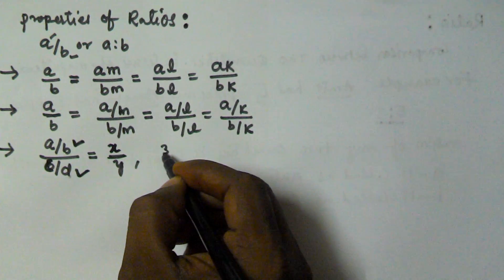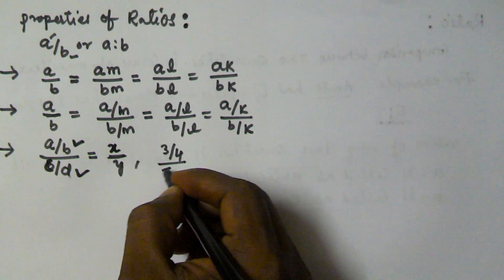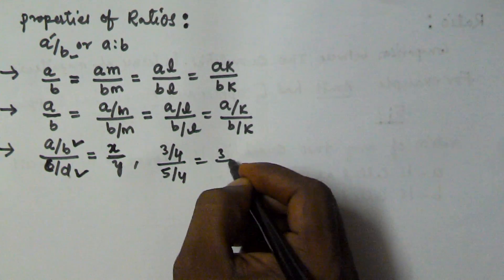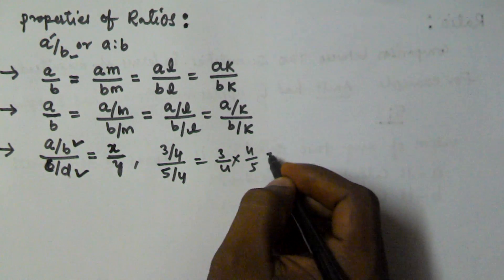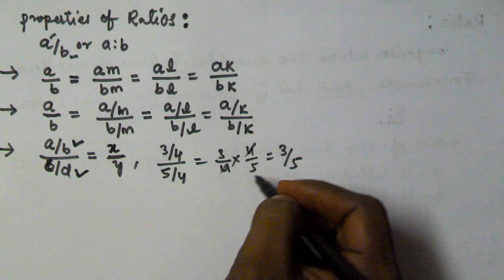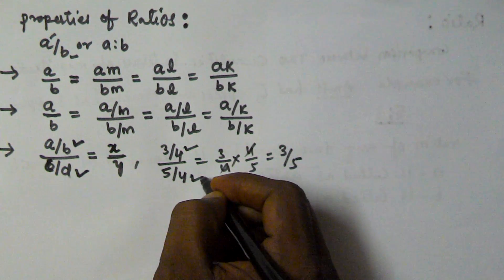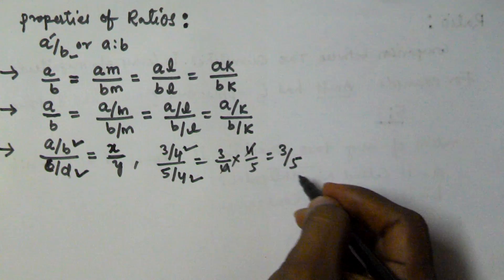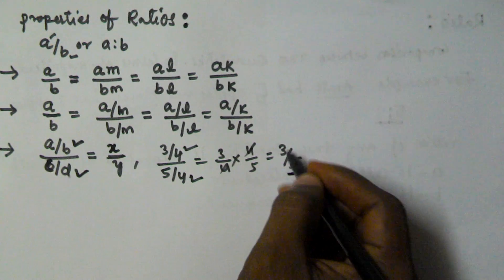Let's take one example. For example, we have (3/4) by (5/4). This can be expressed as 3 by 4 multiplied by 4 by 5, which is equivalent to 3 by 5 — the 4s cancel. So here we have one fraction and here we have another fraction. This is the ratio of two fractions expressed in terms of the ratio of two integers.